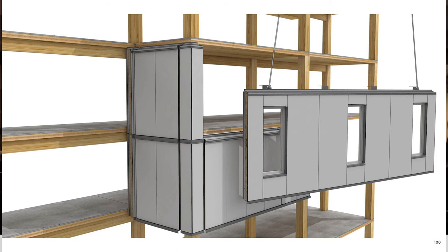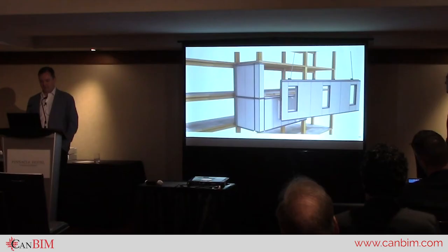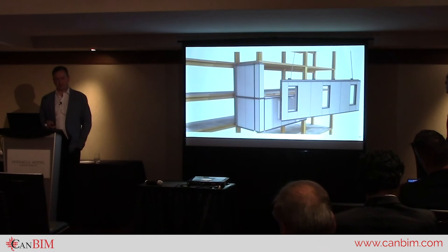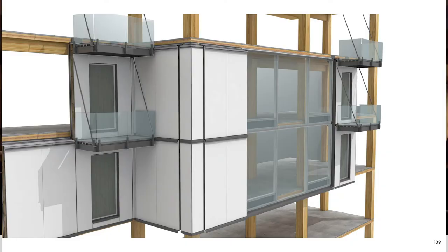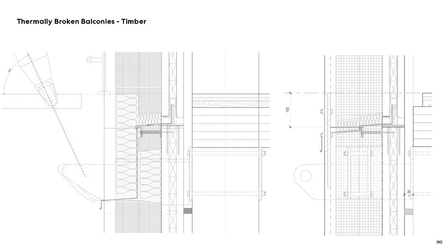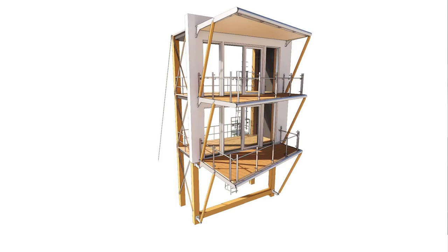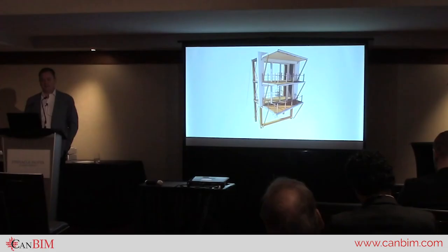Brock Commons at UBC with Acton Ostry Architects really showed us that it rewards you to enclose the building as you go — as soon as you can put walls up, put walls up. We have complications in Vancouver with a bylaw demanding balconies for residential space. Incorporating balconies in a Passive House enclosure on a timber structure is a very unique challenge. We've been working out thermally broken balcony details that are still significantly made of wood, prefabricated and clipped onto the building at four points of contact. We're building a mock-up of this system this spring.